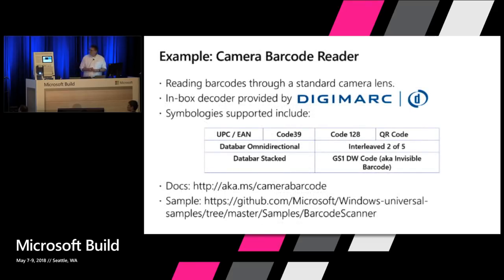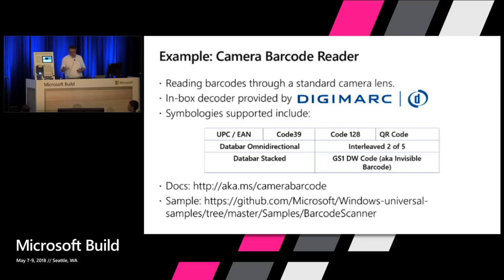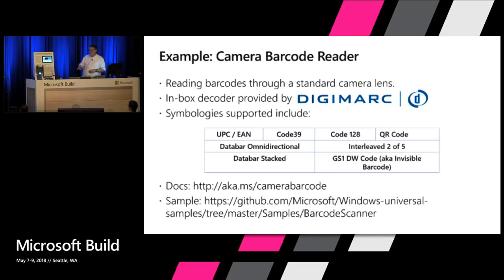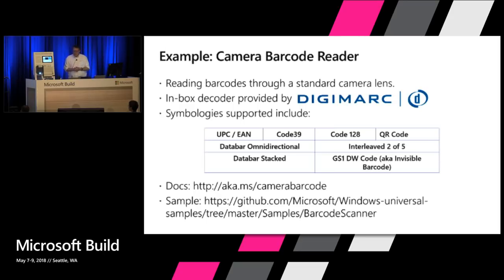Here's another example released in the April 2018 edition of Windows: a camera barcode reader. We heard a lot of positive feedback on this at Hanover, talking with point-of-sale folks. It allows you to take any camera, plug it in, and the decoder is built into Windows — backed by ten years of support, secure the whole time, supporting all common symbologies. We have docs and sample code. I'm going to walk through some code and then show a live demo.